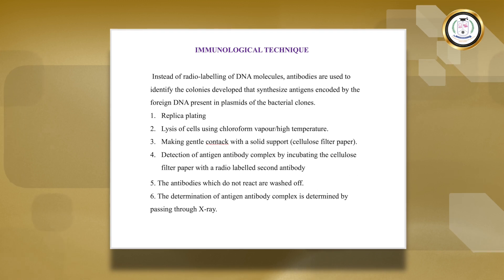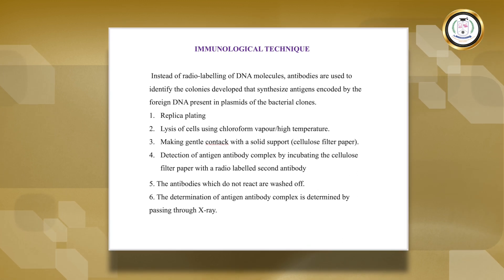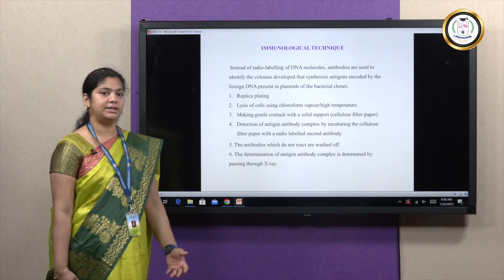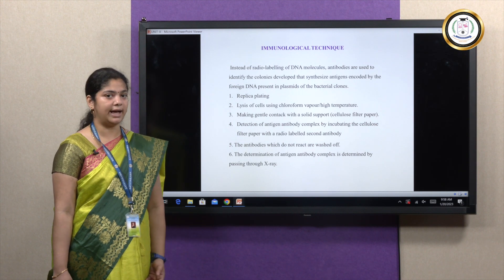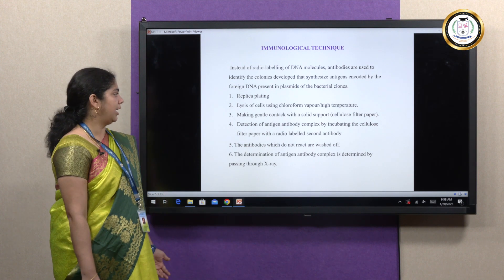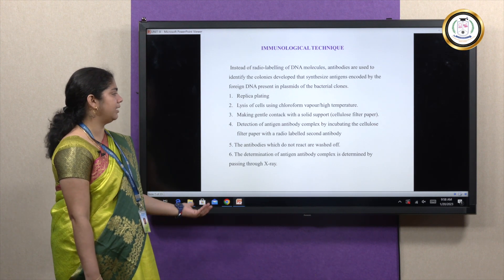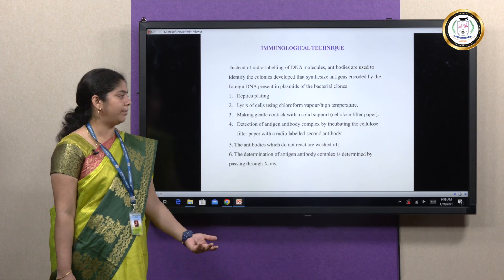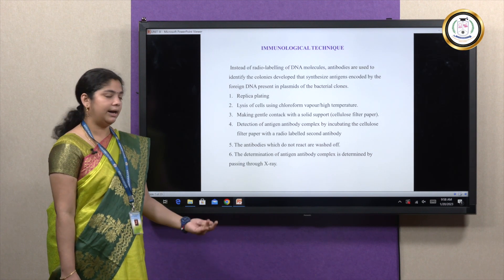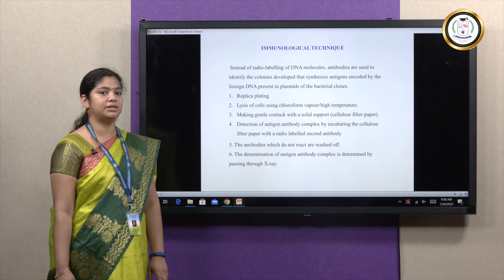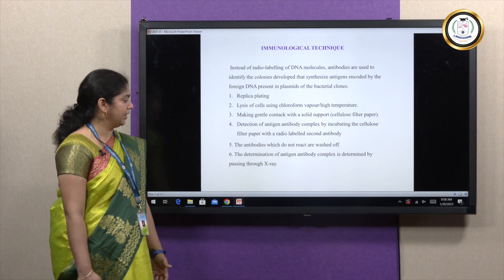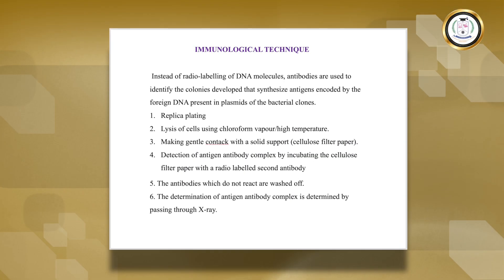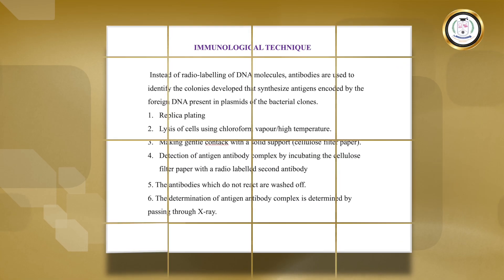The immunological technique is a simple method: you lyse the cells, releasing the DNA/RNA, and then perform antigen-antibody interaction. The recombinant protein will be present and an antigen-antibody complex is obtained. Once the complex is formed, it can be visibly detected by X-ray.